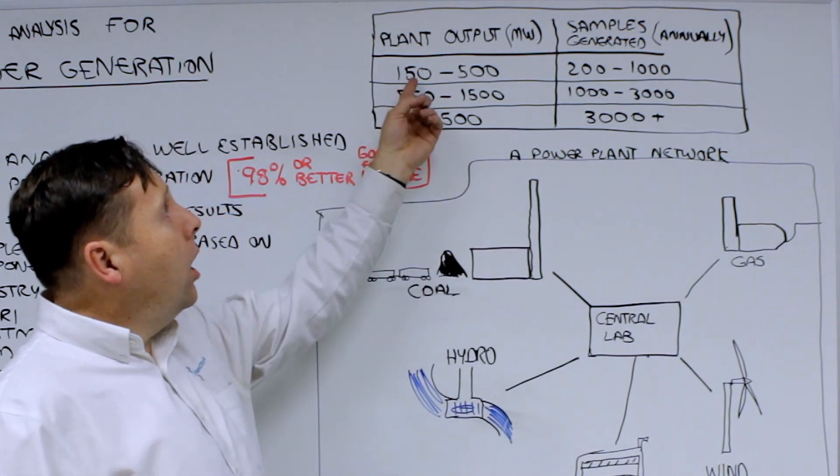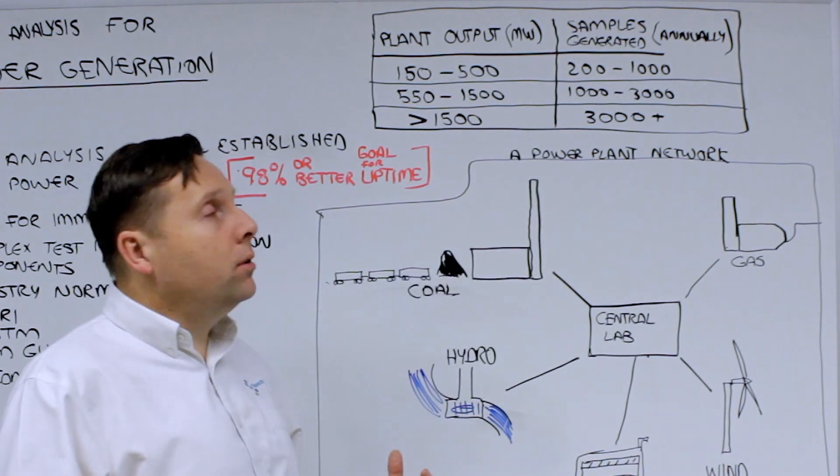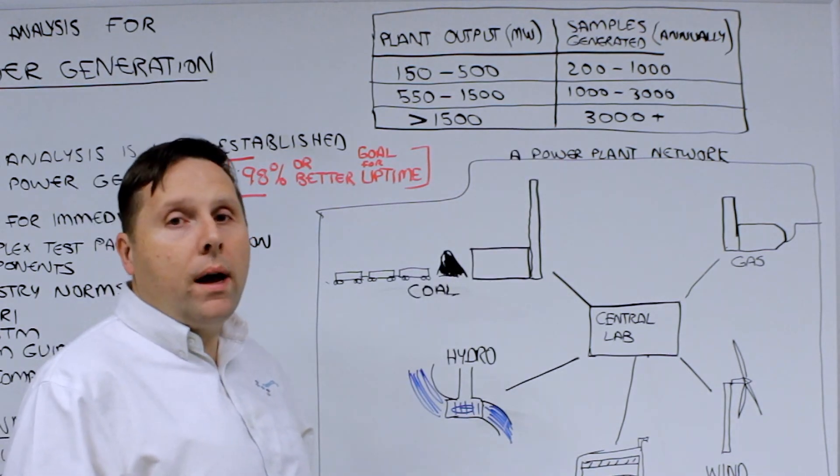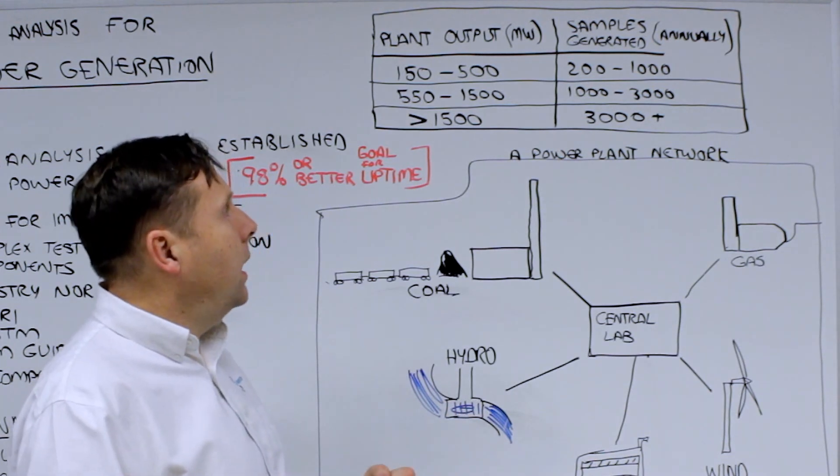So the output on a typical plant, it could be any one of these sites. If the site is between 150 to 500 megawatts of output, generally speaking, they would be producing between 200 to 1,000 samples annually.